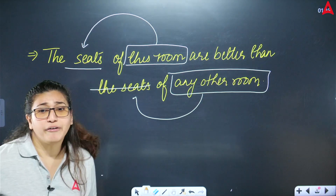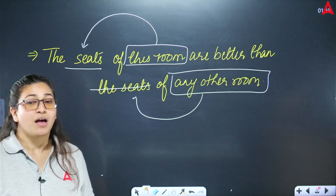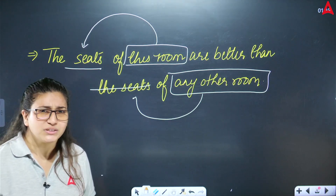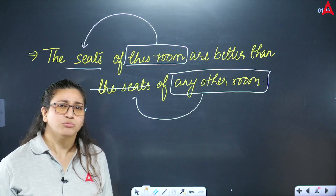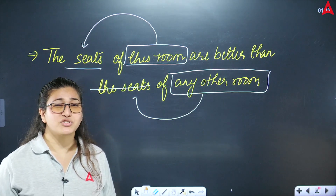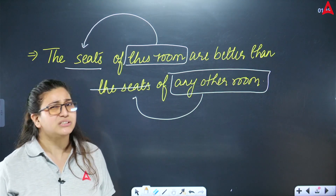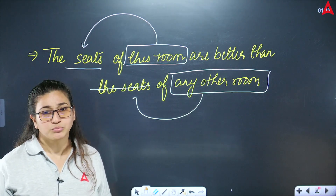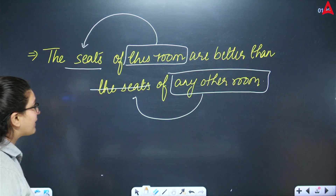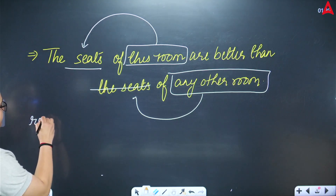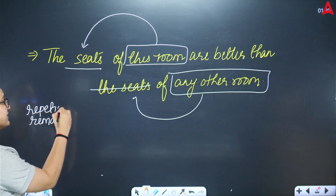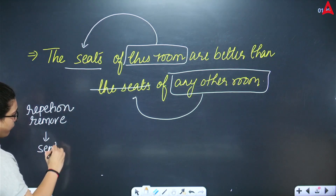Look at the sentence: 'The seats of this room are better than of any other room.' When we removed the repetition from the sentence — we removed 'the seats of this room' the second time — the sentence became very strange.